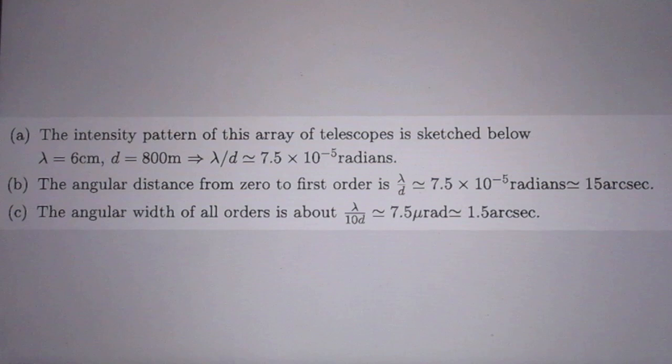Lambda over d, which is the separation between the orders, is 7.5 times 10 to the minus 5 radians, which is 15 arcseconds.